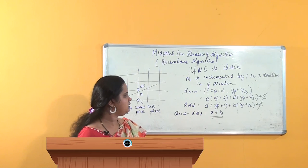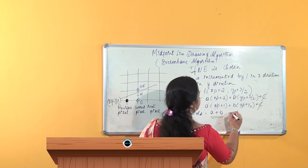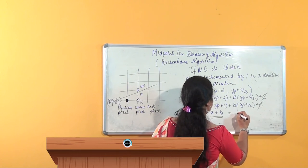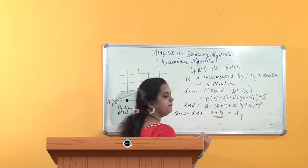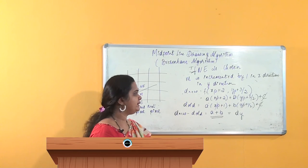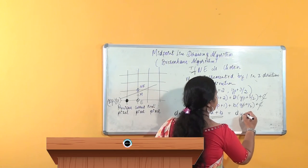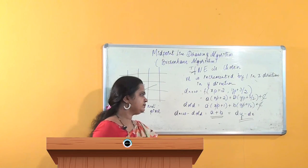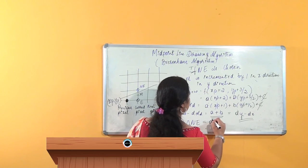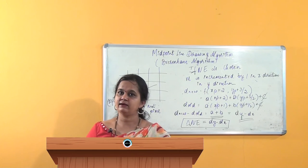So d_new minus d_old equals a + b, which we also need to express in terms of dy and dx. We know that a = dy and b = −dx, as discussed in part one where we assigned these values. Therefore delta_NE = dy − dx. So we now know both delta_E and delta_NE.